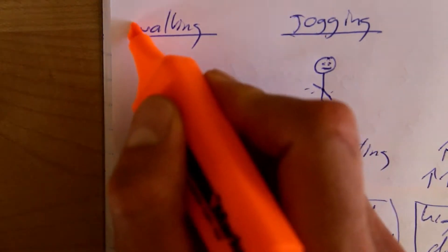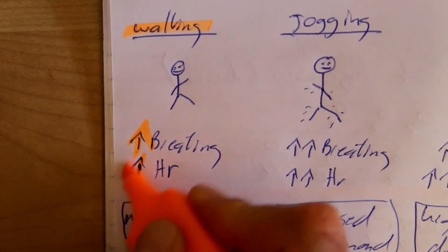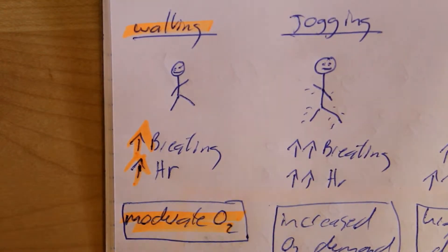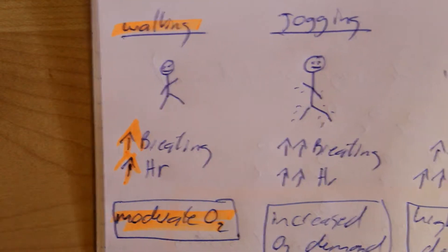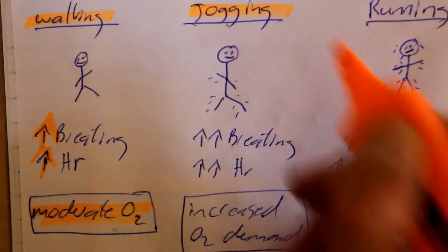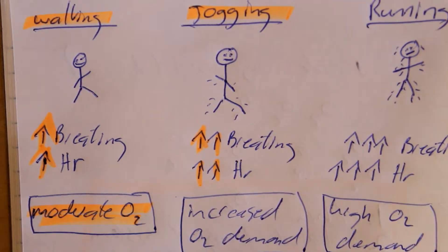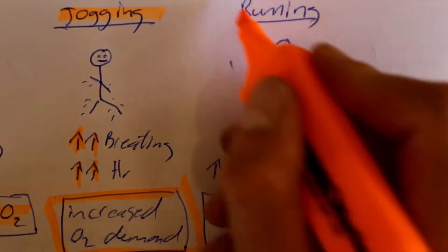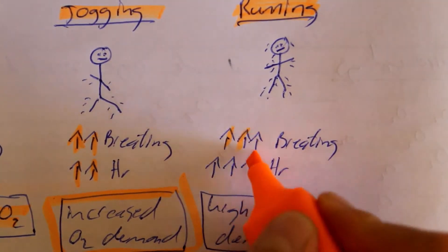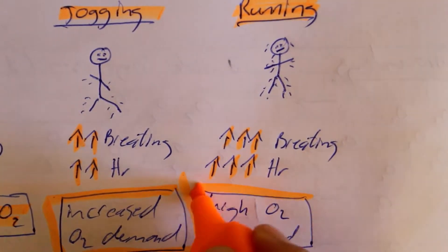When we exercise, our energy and breathing rate get affected, and a process called aerobic respiration occurs to provide us with the energy we need — glucose combined with oxygen gives us carbon dioxide and energy. For example, if we are walking, we have a moderate breathing rate and a moderate increase in heart rate due to moderate oxygen demand. When we start jogging, there's an increase in breathing rate and heart rate caused by increased oxygen demand. When we start running, there's a much higher breathing rate and heart rate because of a high oxygen demand.